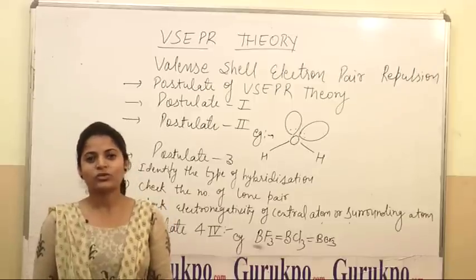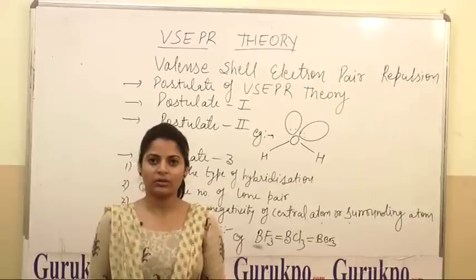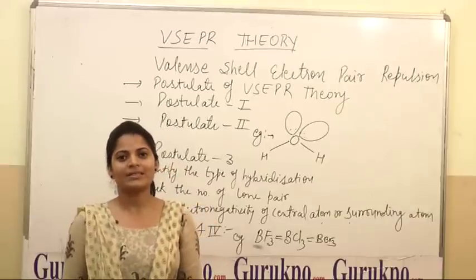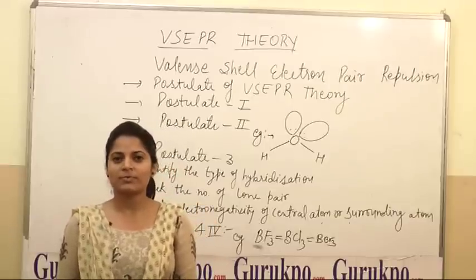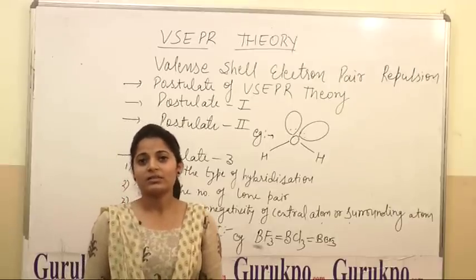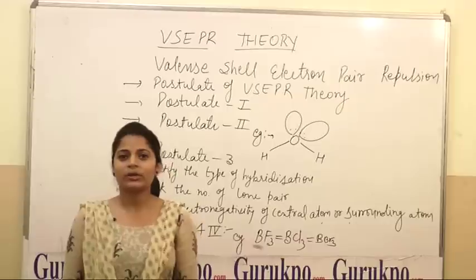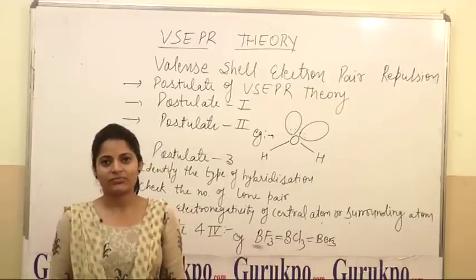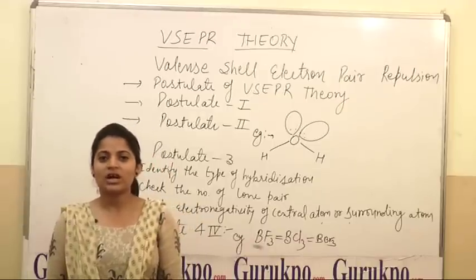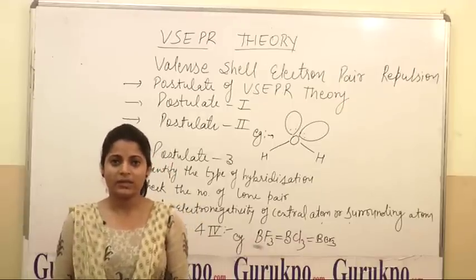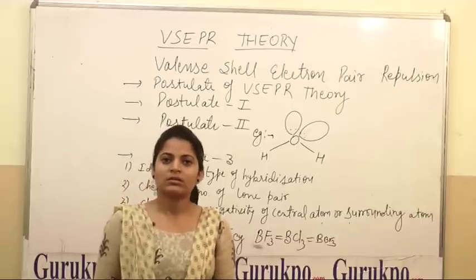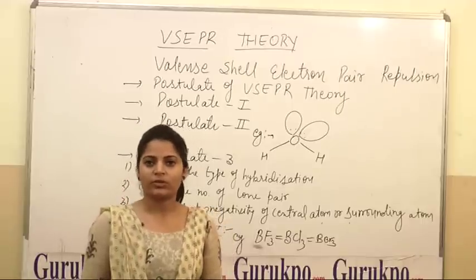This theory was given by Gadesby and Gnion. According to this theory, we will study about the shape of the molecule. The shape of the molecule is identified by a space model, which is formed by the joining of pairs of electrons.